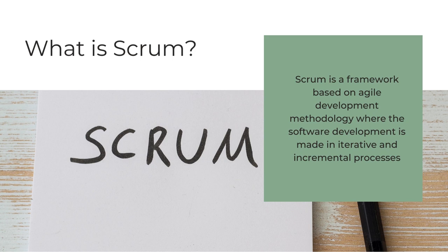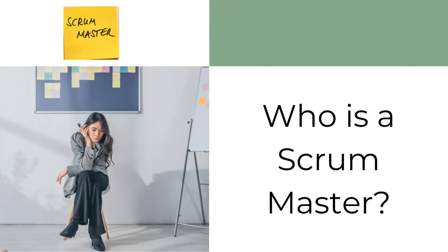Scrum is a lightweight framework with three roles in priority: Scrum Master, Product Owner, and Developers. Scrum has multiple teams where there will not be any sub-teams under it. All Scrum teams will be focusing on a single goal or the objectives of the product. This was just a brief definition of Scrum. Now let us move on to our next topic and understand who a Scrum Master is.